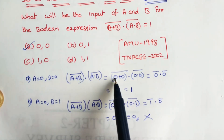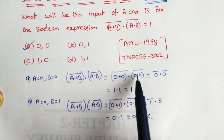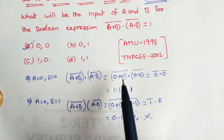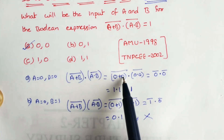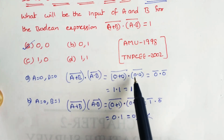With A=0 and B=0: 0 plus 0, that is 0 plus 0, into 0 dot 0. Because A is 0 and B is equal to 0, so 0 plus 0 is 0.